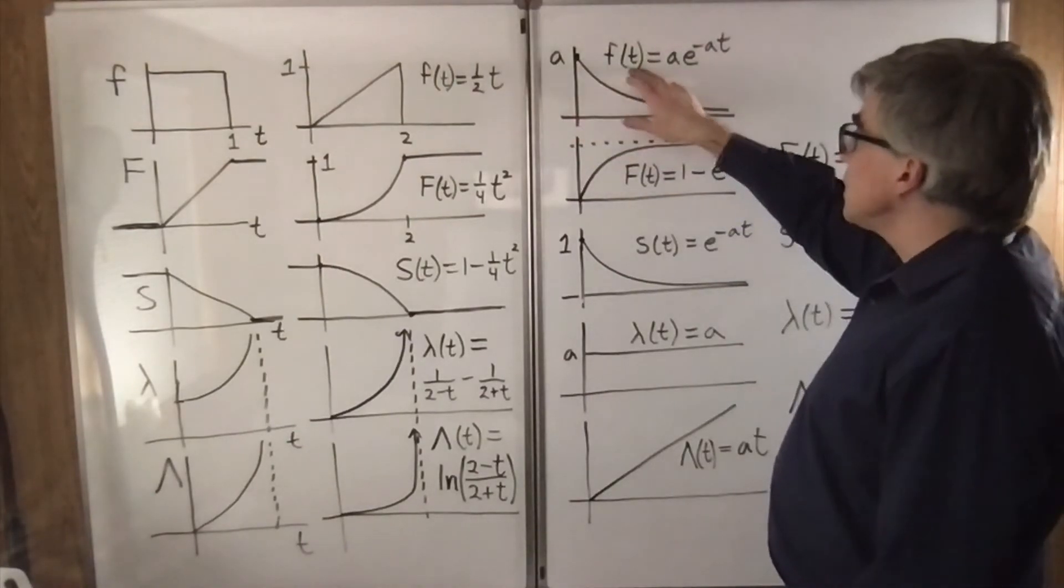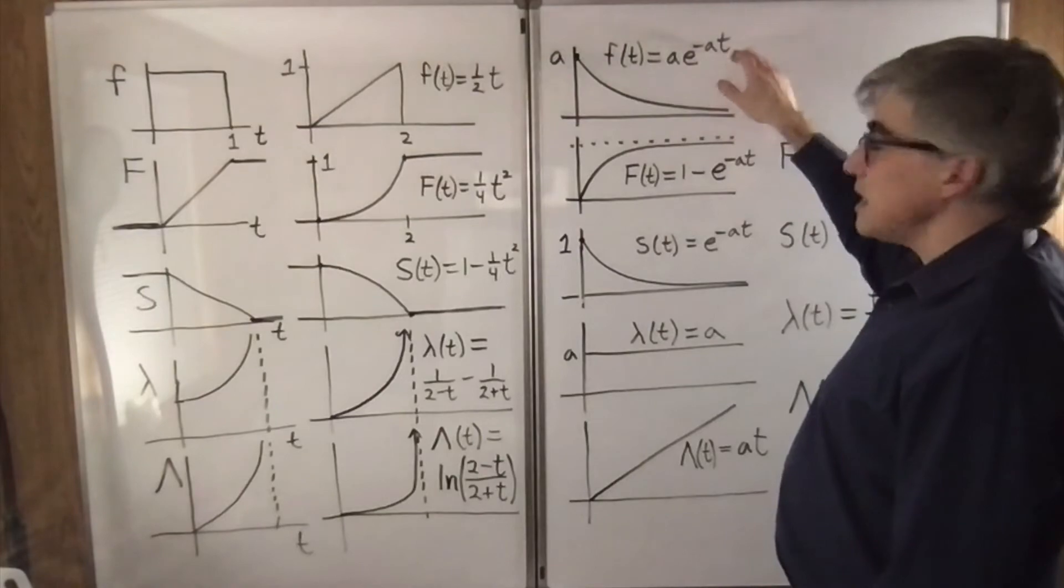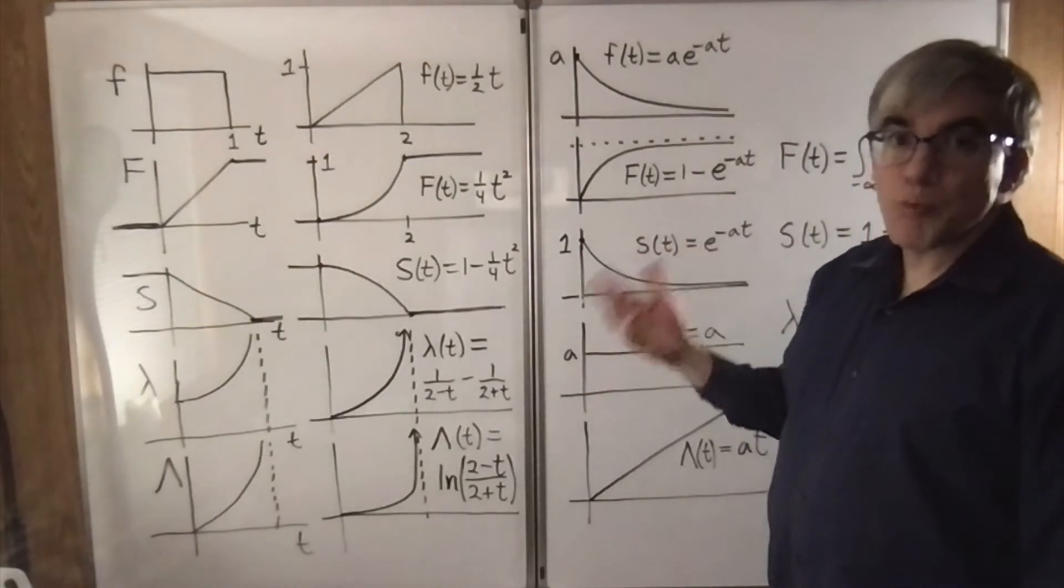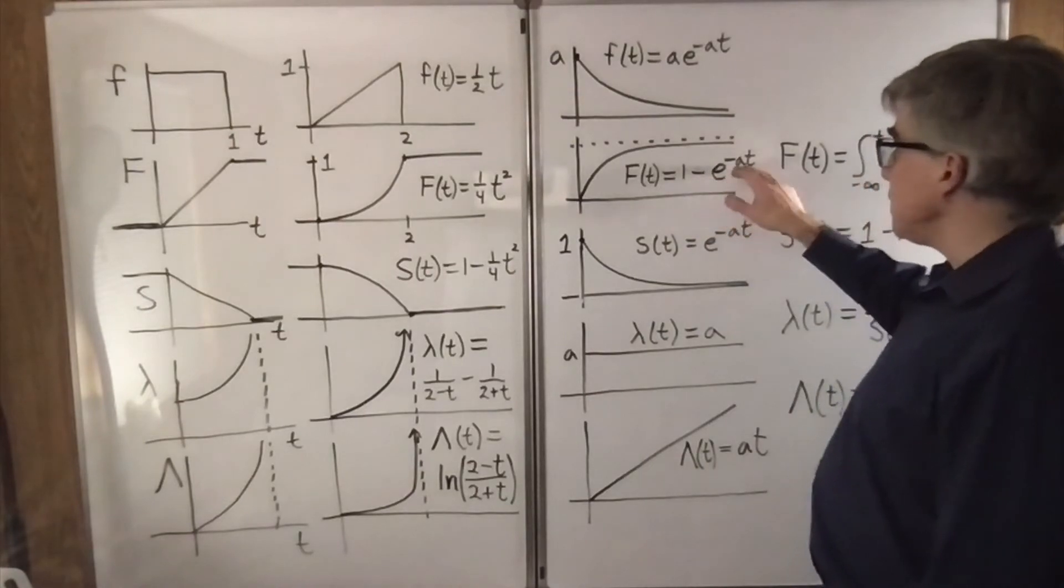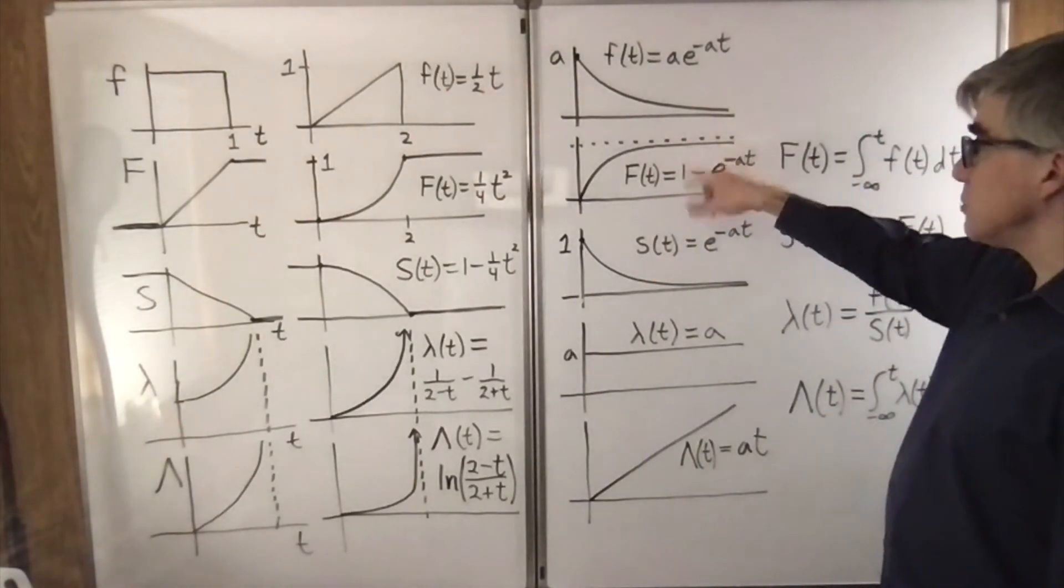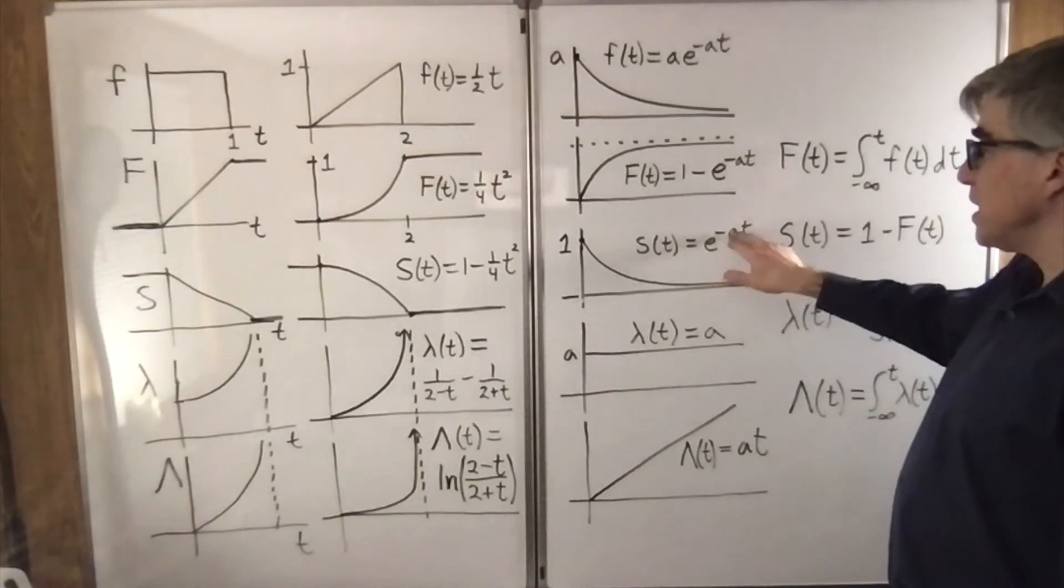The exponential density is f of T equals a e to the minus a T if your mean is 1 over a. Big F of T is 1 minus e to the minus a T. The survival function is 1 minus 1 minus, so you just get e to the minus a T.